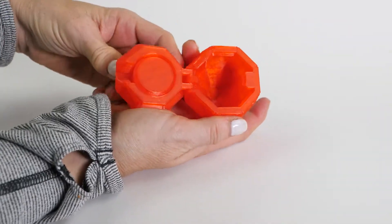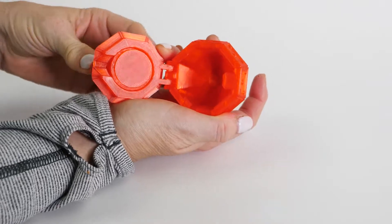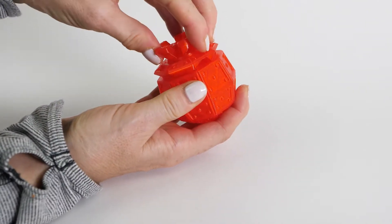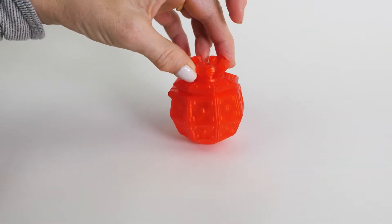The tolerances here are just perfect. You can pull it off the build plate and twist it closed. I printed the single color model, but there's a multiple part option as well.